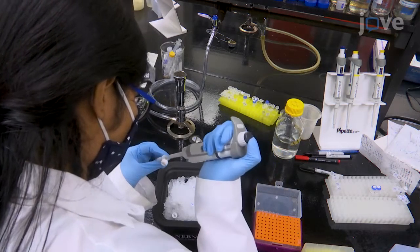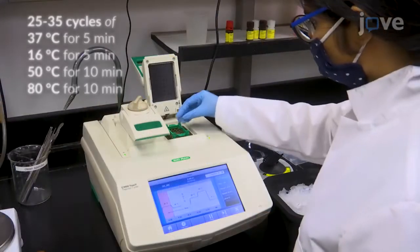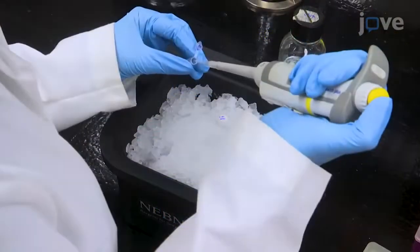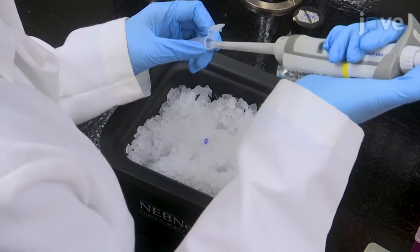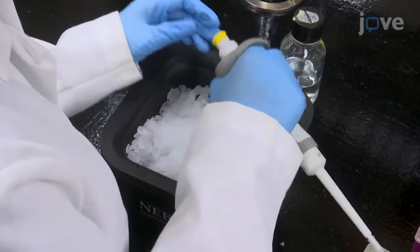Add double distilled water to bring the total volume to 10 microliters. Then run the cloning reaction. Transform the entire reaction mix into the DH5-alpha strain or equivalent Escherichia coli chemically competent cells by heat shock.